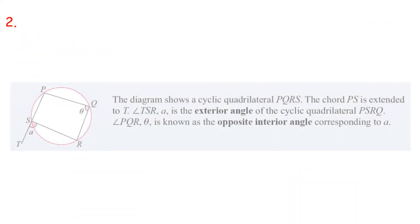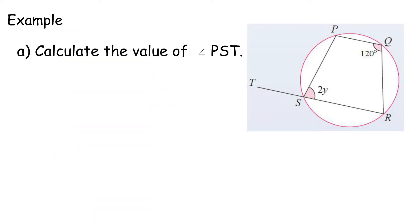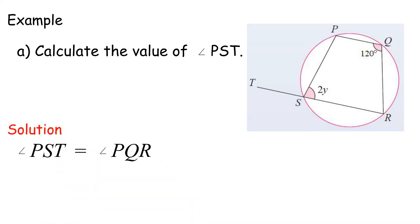Property 2: Angle TSR is the exterior angle of cyclic quadrilateral PSRQ. Angle PQR is the opposite interior angle corresponding to it. Therefore, Angle A equals Angle PQR. Example A: Calculate the value of Angle PST. Angle PST equals Angle PQR, equals 120 degrees.